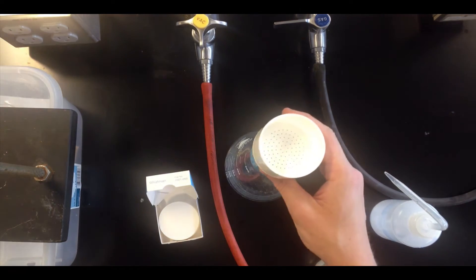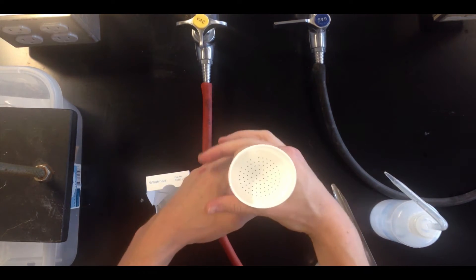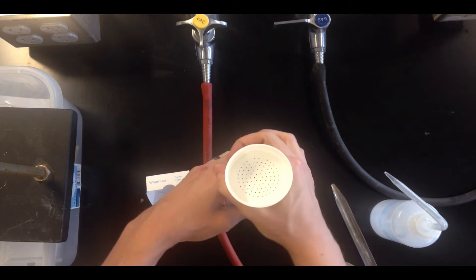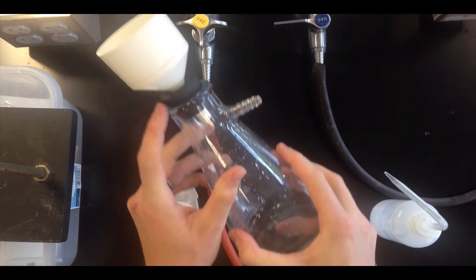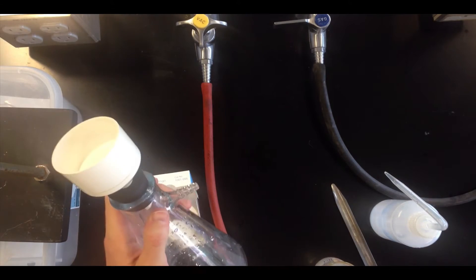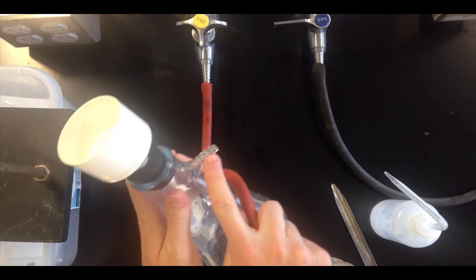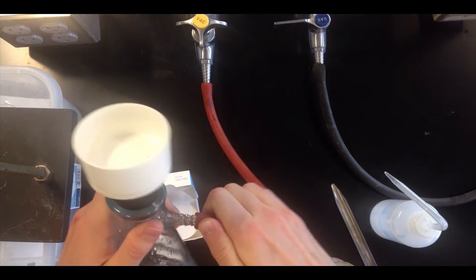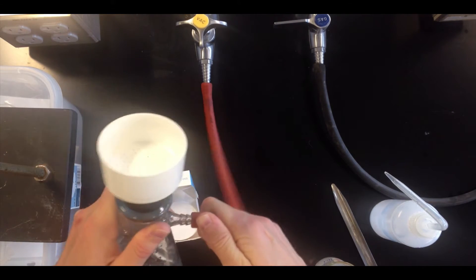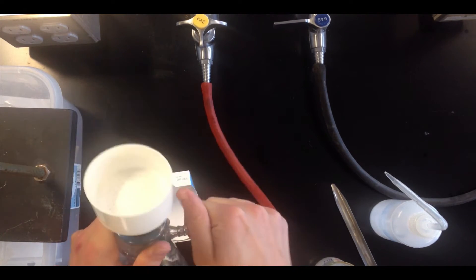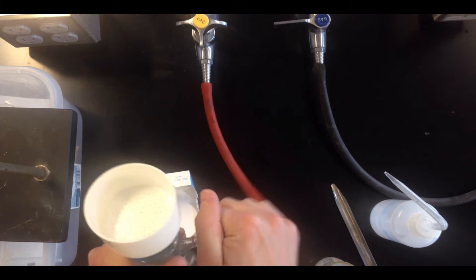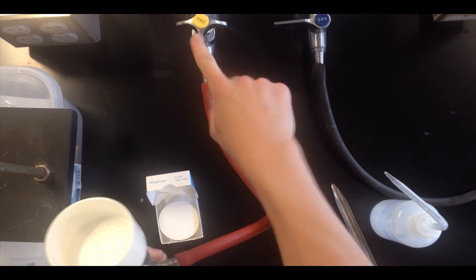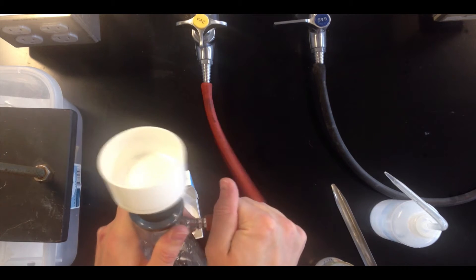To set up the apparatus, we simply plug in the Buechner funnel to the filter flask, making sure to get a good seal right here. We then connect the sidearm of the filter flask to the vacuum, and make sure to connect up to the vacuum tap, not the gas tap. The vacuum tap is the one with the yellow piece on top, and it says VAC, which makes it pretty clear that this is the vacuum tap.